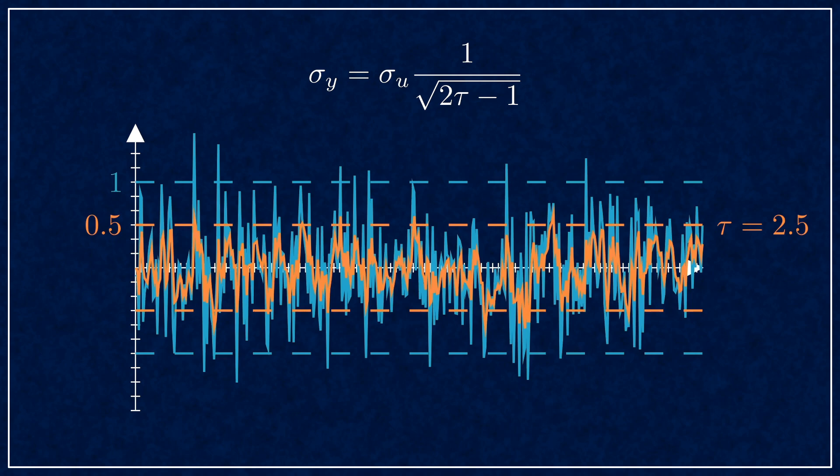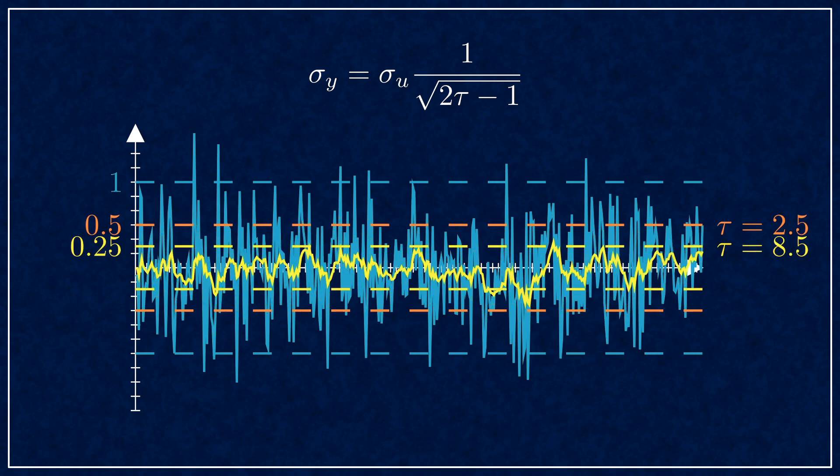If you want to cut it in half again, you need to increase tau to 8.5. That works out to be one quarter amplitude. Generally for larger values, once that minus 1 term becomes negligible, you need to quadruple the time constant to double the noise reduction.